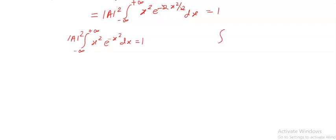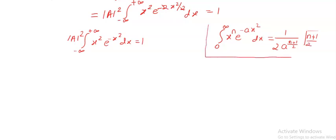So let me write the standard integral for this. If the integration runs from 0 to infinity of x raised to n times e to the power minus A x square dx, this is equal to 1 upon 2 times A to the power n plus 1 divided by 2, times gamma of n plus 1 divided by 2. This is the standard integral formula — it is better to remember this formula.